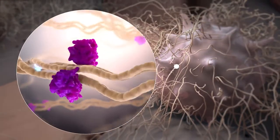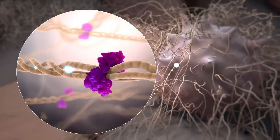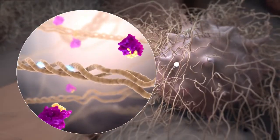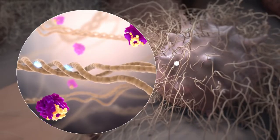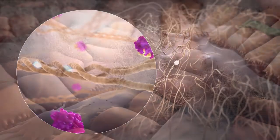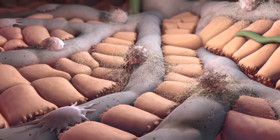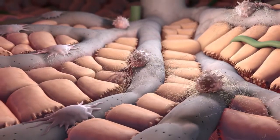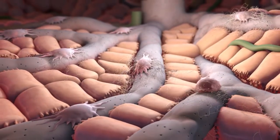Thirdly, CRV431 blocks the actions of cyclophilin B, an important regulator of collagen production in stellate cells. This leads to reduction in collagen secretion and fibrotic scarring which is a primary goal in the treatment of NASH.